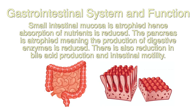Regarding the gastrointestinal system: the small intestinal mucosa is atrophied, hence absorption of nutrients is reduced. The pancreas is atrophied, meaning the production of digestive enzymes is reduced. There is also a reduction in bile acid production and intestinal motility.